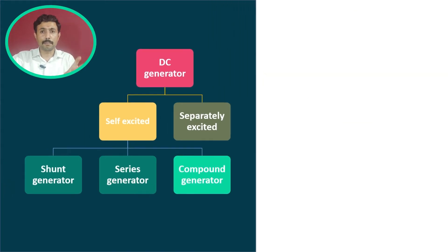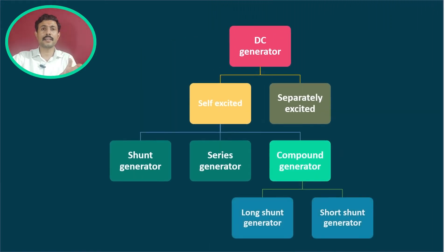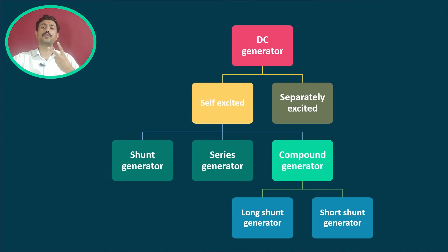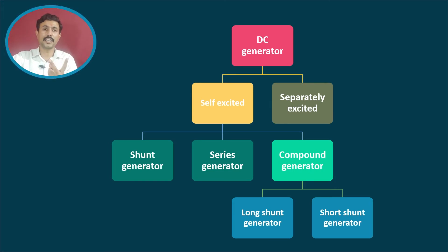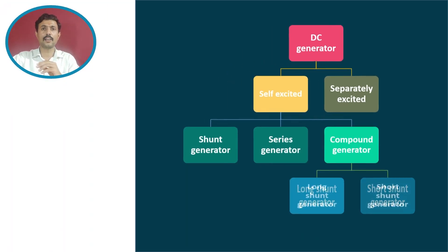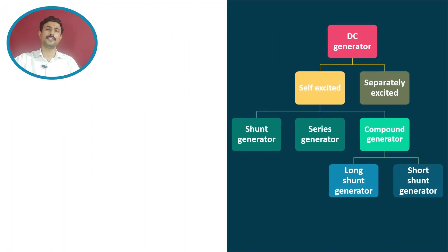The compound generator is further classified into two categories: the long shunt generator and the short shunt generator. From these two, we will first see the long shunt generator.